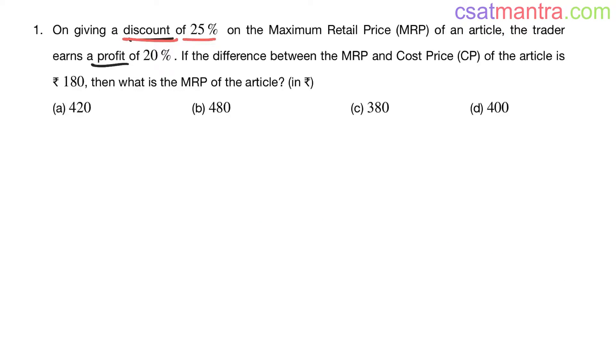Now let's solve this problem. On giving a discount of 25% on the maximum retail price (MRP) of an article, the trader earns a profit of 20%. If the difference between the MRP and the cost price (CP) of the article is ₹180, then what is the MRP of the article? We have been asked to find MRP, the maximum retail price.